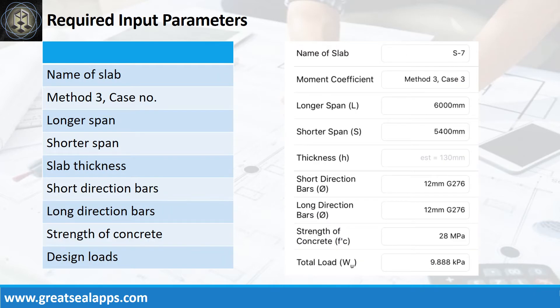Enumerate input parameters required. Name of slab: S7. Case 3 panel design. Longer span: 6,000 mm. Shorter span: 5,400 mm. Slab thickness: 130 mm. Main bars: 12 mm bar at grade 276. Strength of concrete: 28 MPa. And factored load: 9.888 kPa.